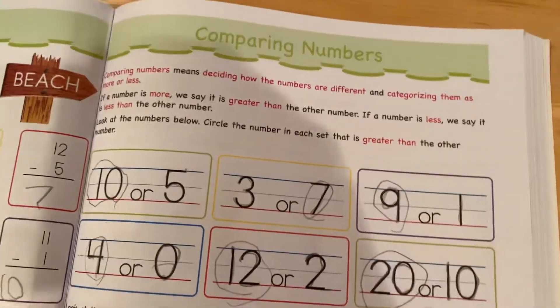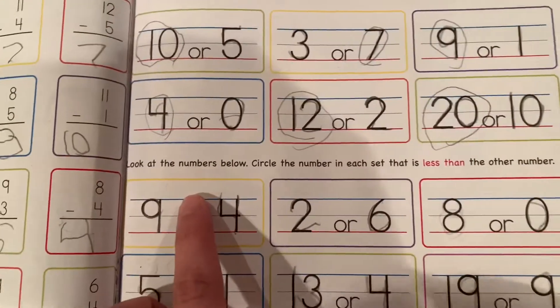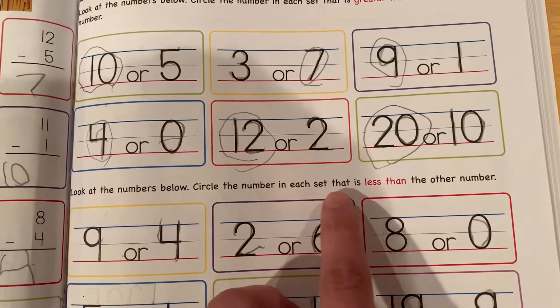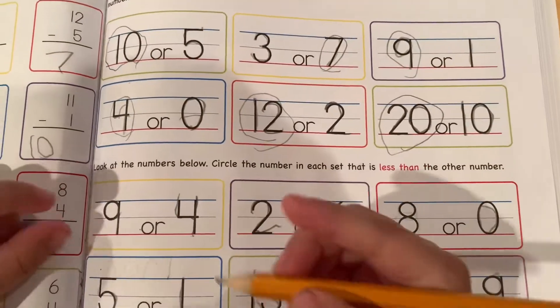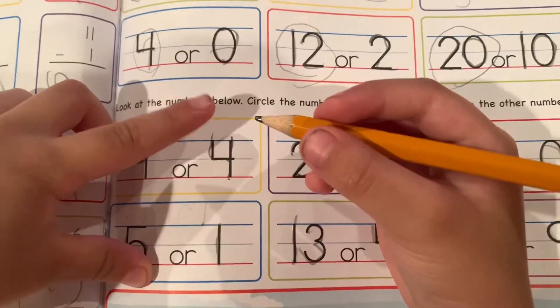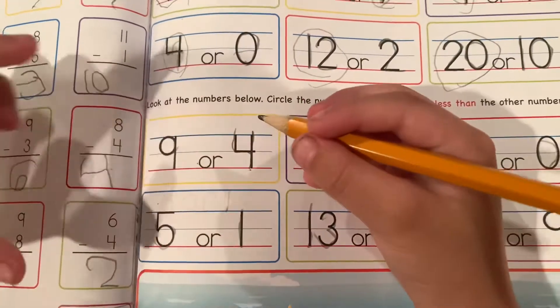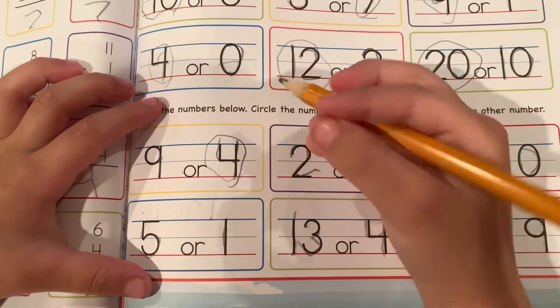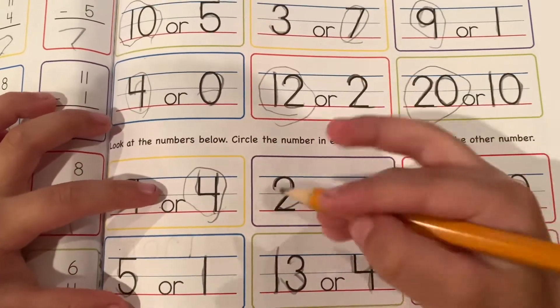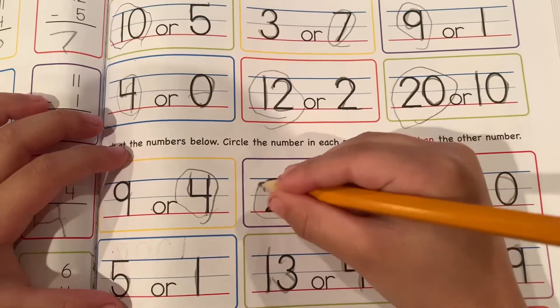Good job. How about... Look at the numbers below. Circle the number in each set that is less than the other number. Which one is less? Nine or four? Which is smaller? Four. Okay. How about the next one? Two or six? Which is less? Two. Yes.